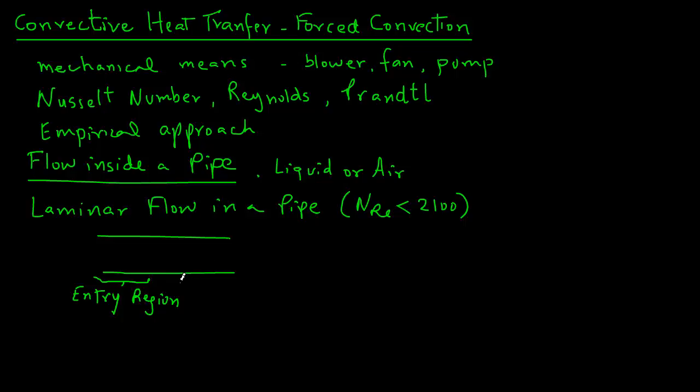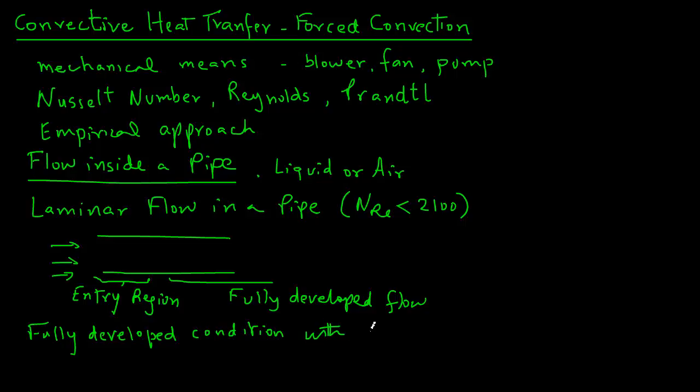Our first two expressions will be for the fully developed flow, and then the third expression will involve both the entry region and the fully developed flow. If we have laminar flow in a pipe, then we may have a fully developed condition with constant surface temperature of the pipe. In this case, the formula is very simple. Nusselt number will equal 3.66.